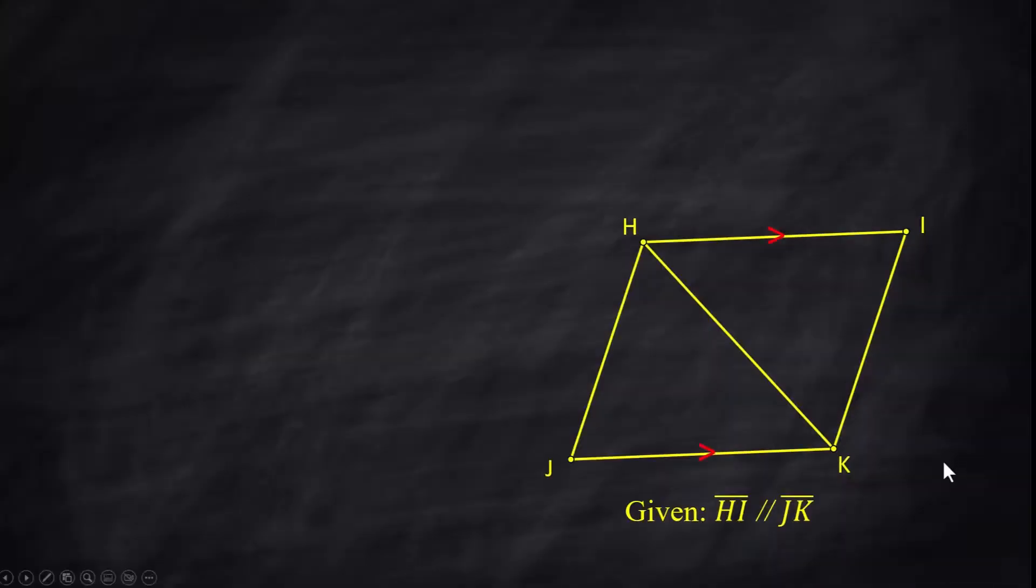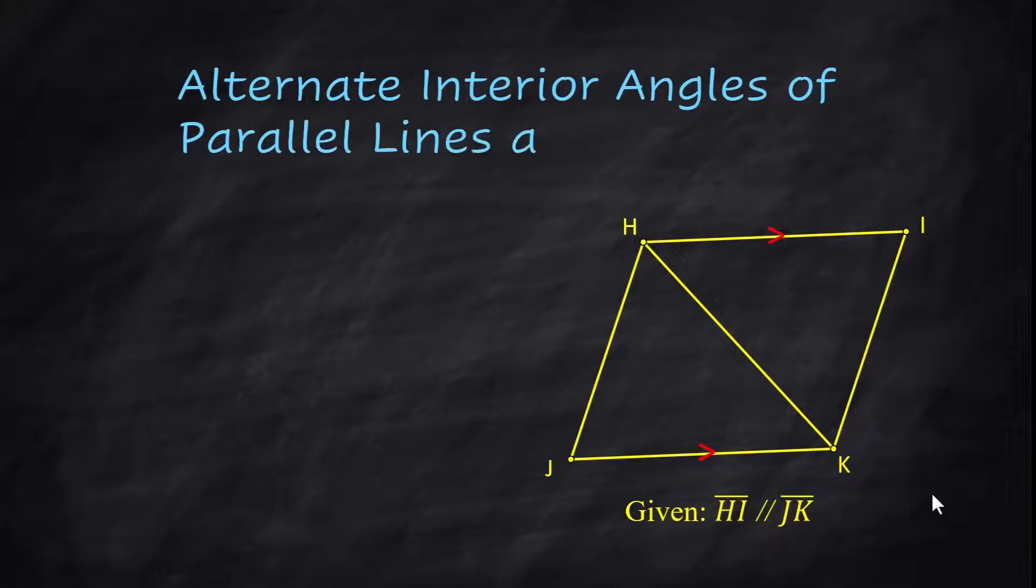Right in this figure, we're told that segment HI is parallel to segment JK. This is the given, but I've also got these parallel markings here. So when you see parallel lines, you are allowed to use all of the things you've learned about what happens with angles and parallel lines and transversals. Alternate interior angles of parallel lines are congruent. You're going to need to use that a lot.